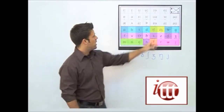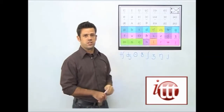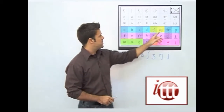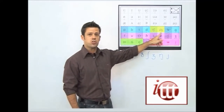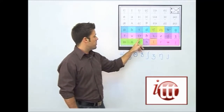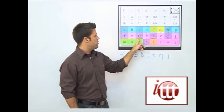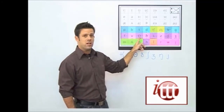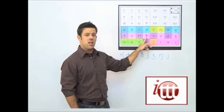First, we have one symbol which represents a CH sound, typically spelt with a CH. Next to that, we have a symbol which represents the J sound. Moving further down, we have our TH sounds — one sound would be TH as in think, and another sound would be TH as in that.